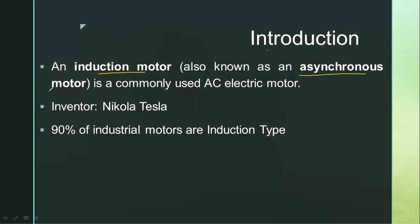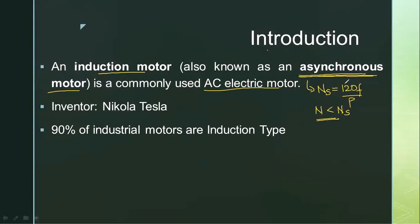An induction motor, also commonly known as an asynchronous motor, is an AC electric motor. The meaning of asynchronous is that induction motors do not run at synchronous speed, which is given by 120F/P. The induction motor always runs at a speed less than synchronous speed — that is why they are called asynchronous motors. They are widely used in industries, commercial areas, as well as domestic applications, and ninety percent of industrial motors are of the induction type.